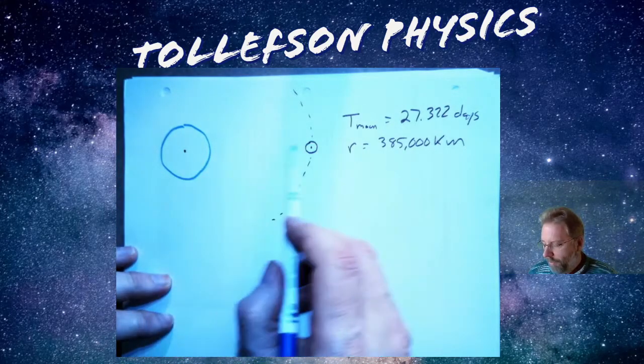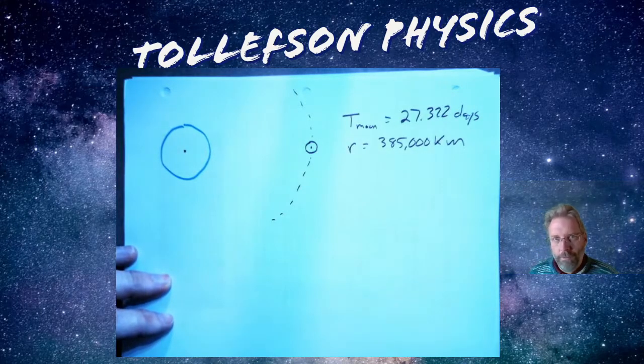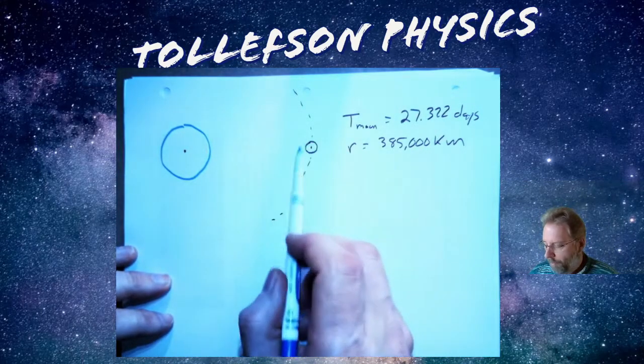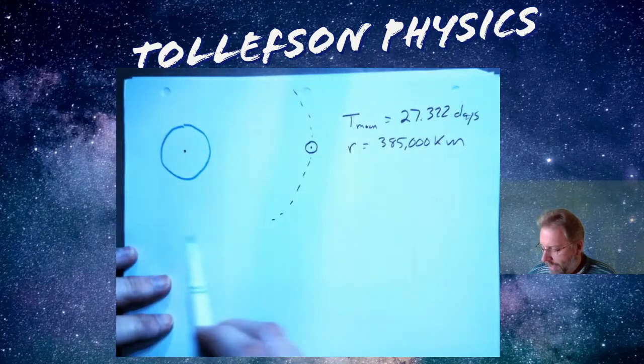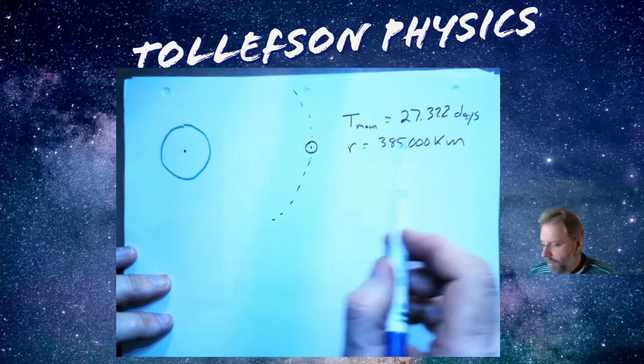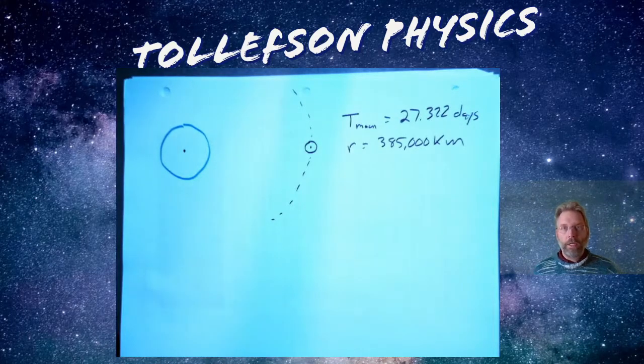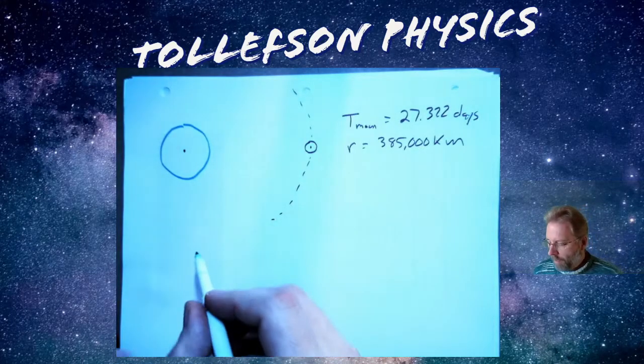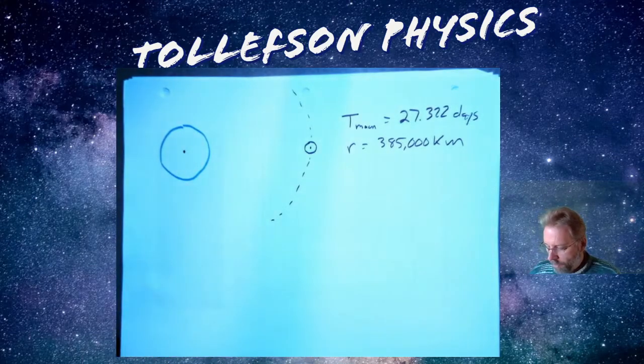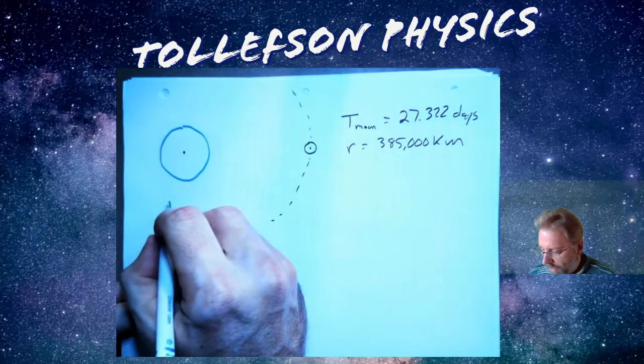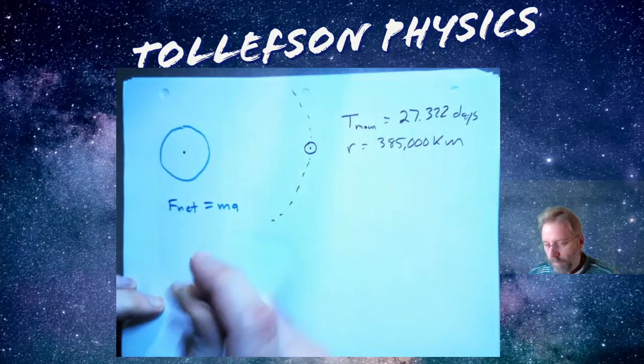You basically look at a star that doesn't move relative to this. You wait till that comes back around to that same star and you get something like this. All right and so we're going to use that information to figure things out. And once again I'm going to start like I always start with Newton's second law, F net equals mass times acceleration.